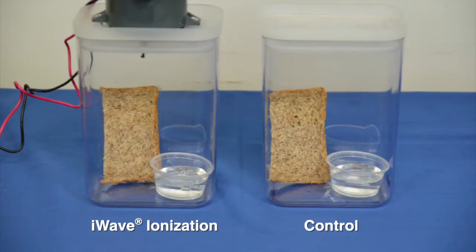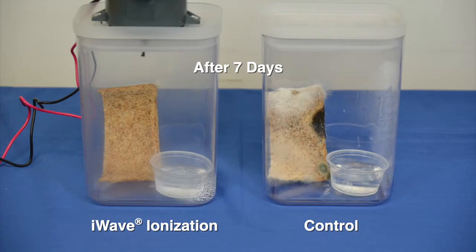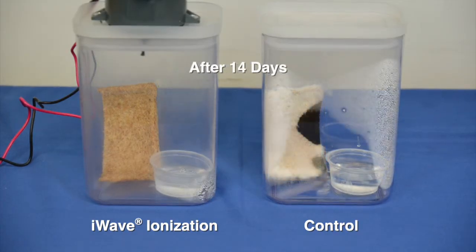A simple demonstration shows how iWave prevents bacteria from growing on bread over time. This shows how the products address certain bacteria downstream of the device, at the coil, and in the living space.